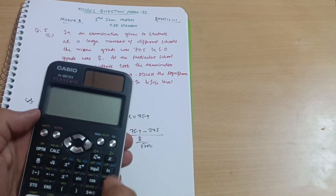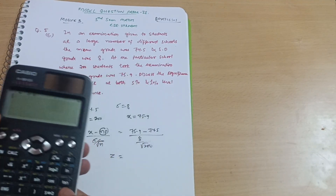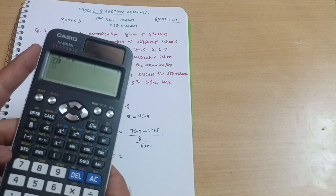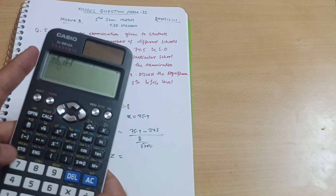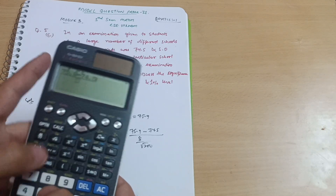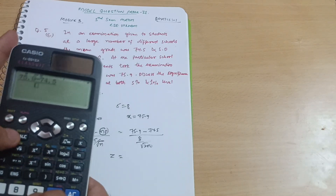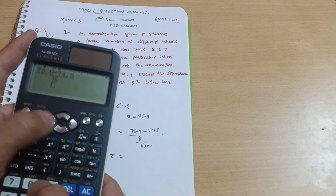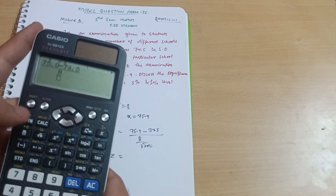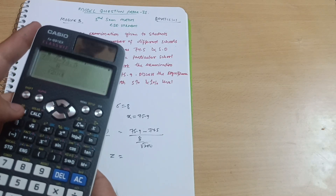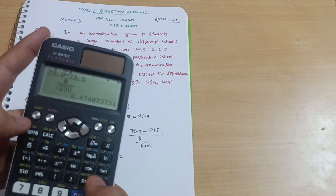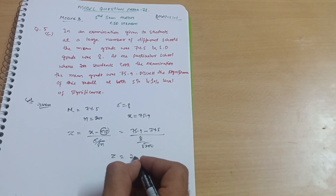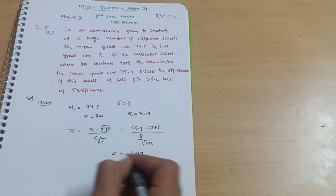Calculating: 75.9 minus 74.5 divided by 8 divided by under root of 200, which is equal to 2.47. So our z value is 2.47.